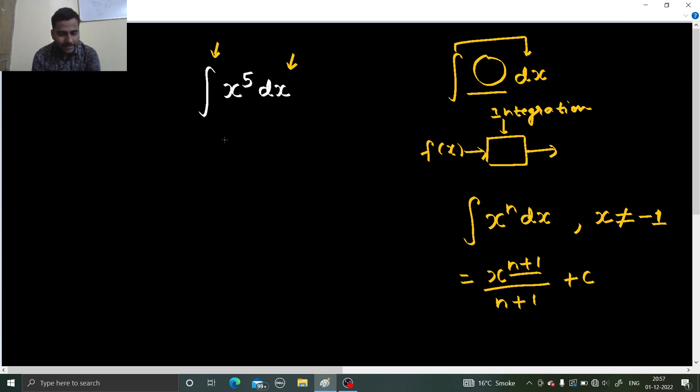So there we go. We have x power five. Whatever the value except minus one, you can always go ahead with this formula. This will be x power five plus one, copy paste the same power, so five plus one.